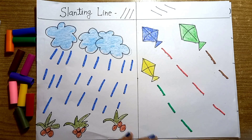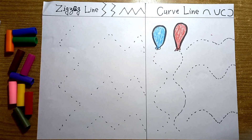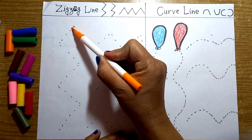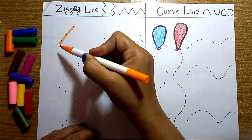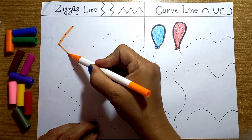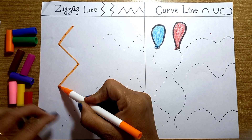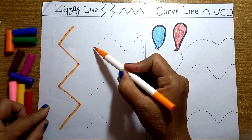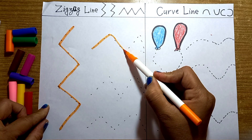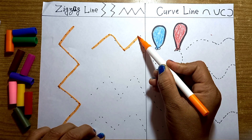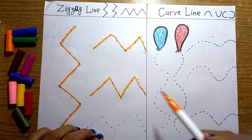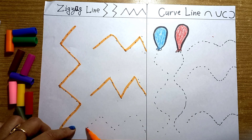Kites fly in the sky. Next is zig zag — right, left, right, left. It's a zig zag, and this is also called coco line, or mountain line.